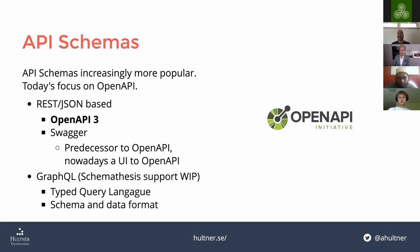API schemas are a specification for your API. OpenAPI is probably the most popular one today, which was previously known as Swagger — older versions are still called Swagger. Today Swagger is a UI for OpenAPI. It's very popular for REST-based APIs; microservices use these a lot and it makes it much easier to work with other developers.